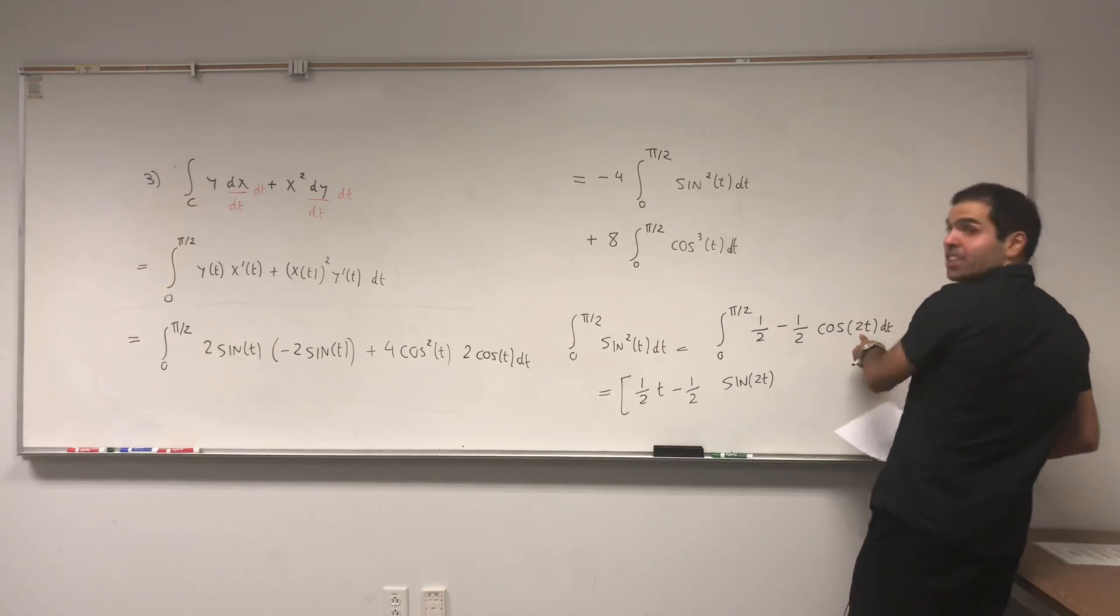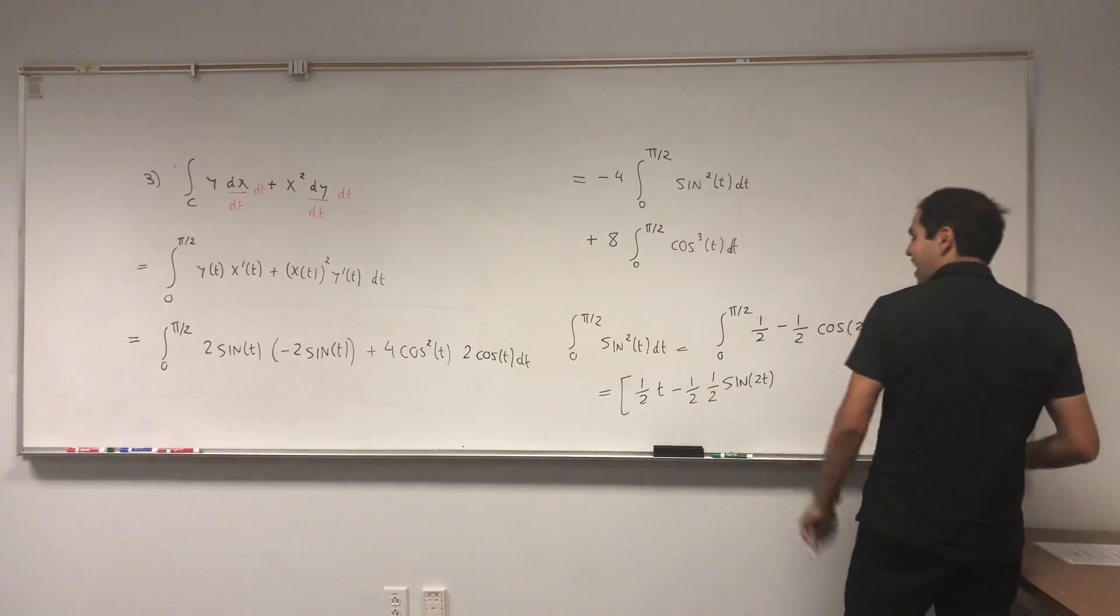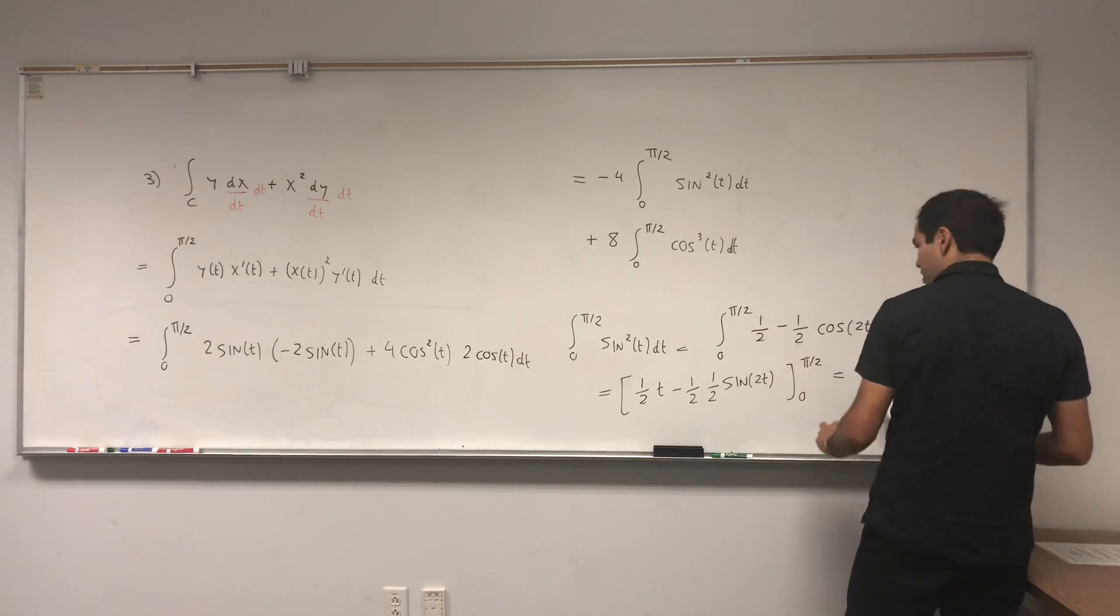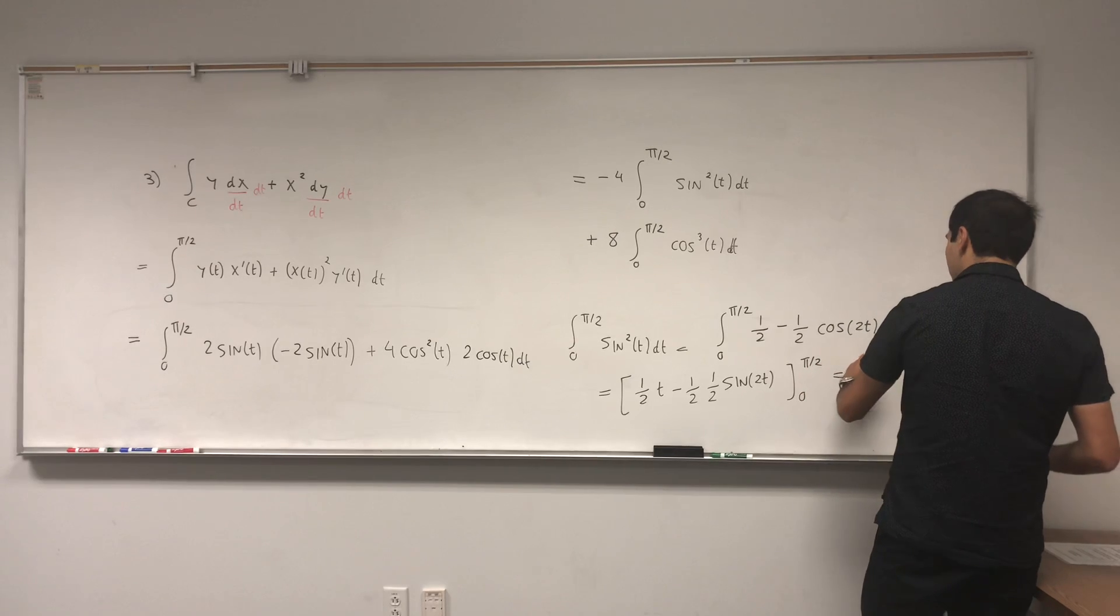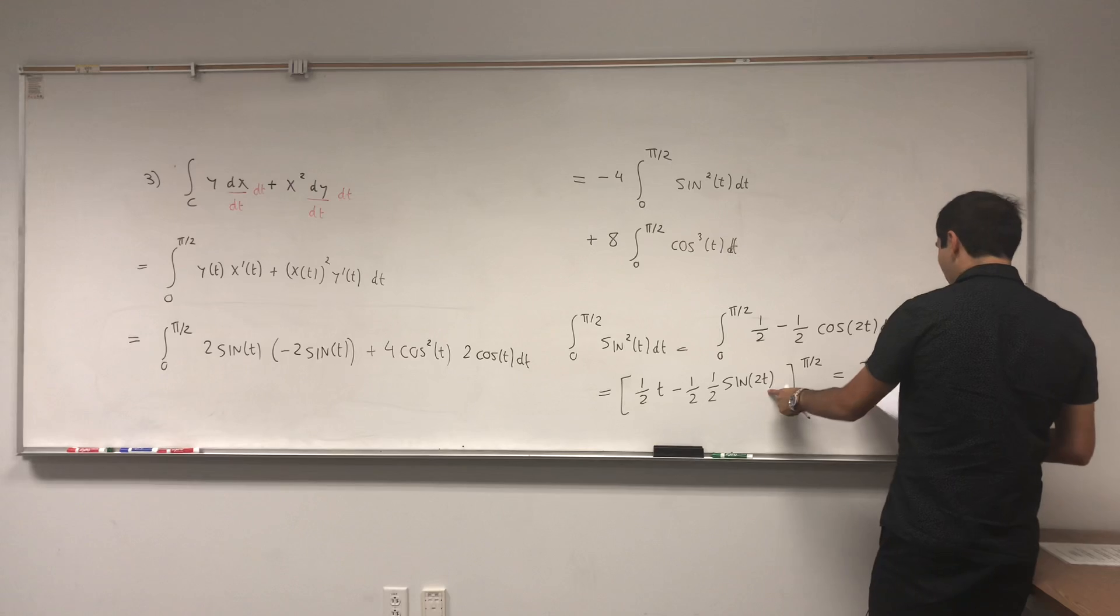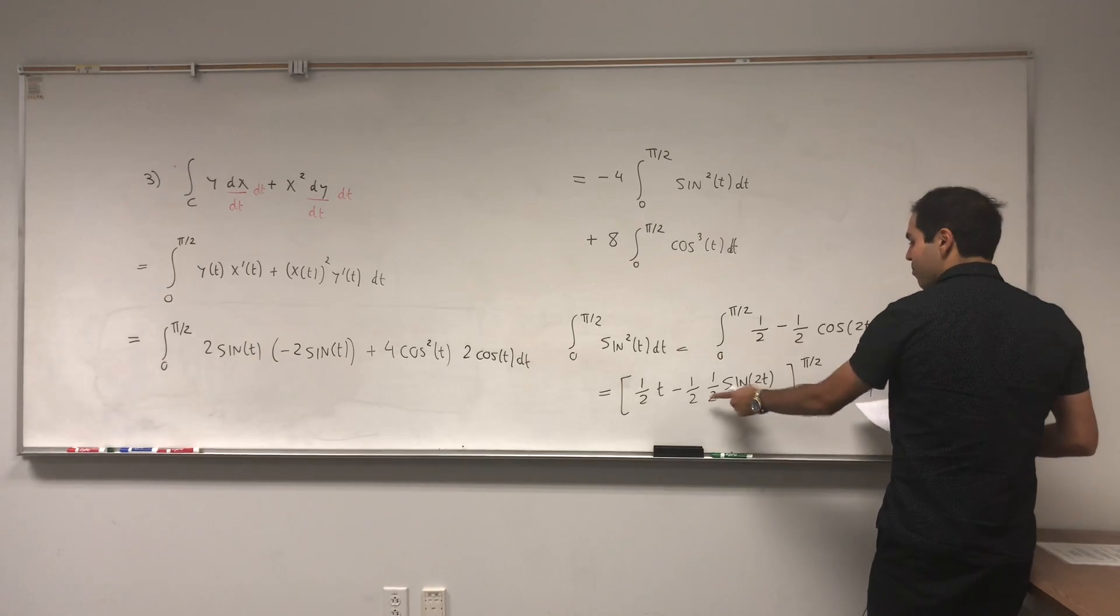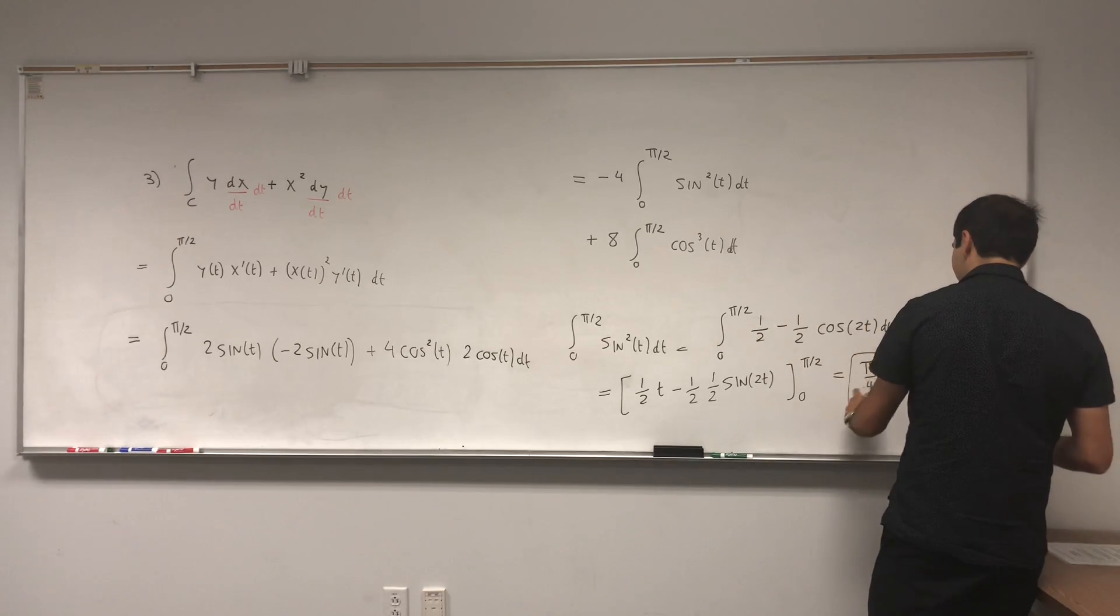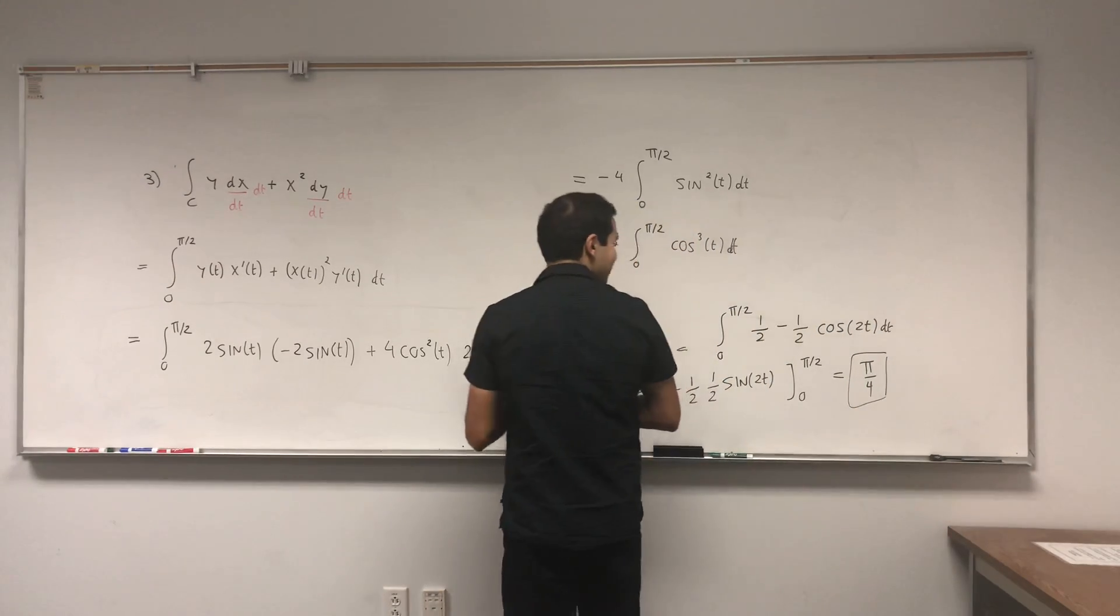And that becomes one half t minus, so cosine becomes sine of 2t. We still have that one half but we have an extra factor of one half from the chain rule, so one half times one half from 0 to pi over 2. And what you end up with is, so t equals pi over 2 becomes pi over 4 minus one quarter sine of pi. Well, sine of pi is 0 minus one quarter sine of 0 is 0, so you just have pi over 4.